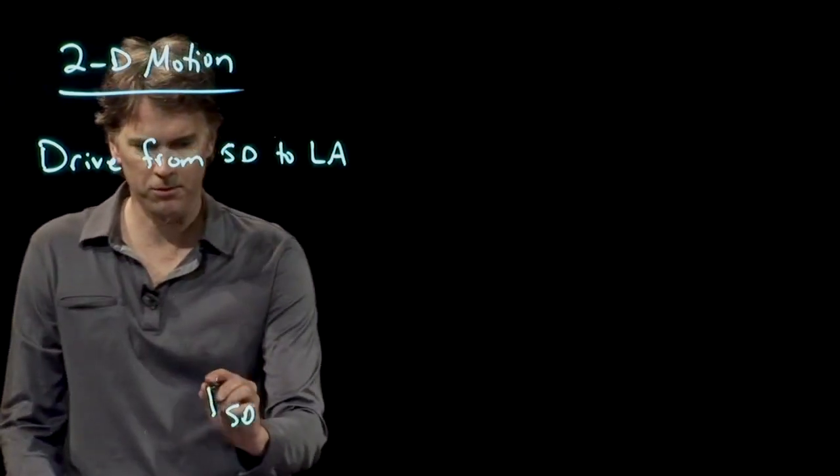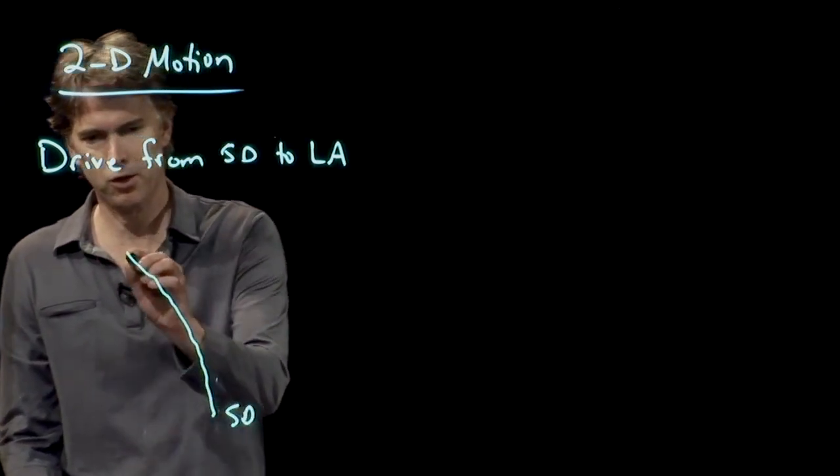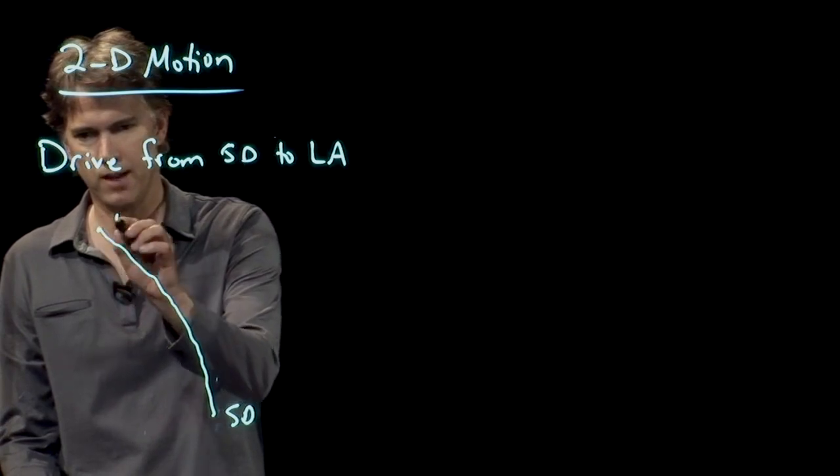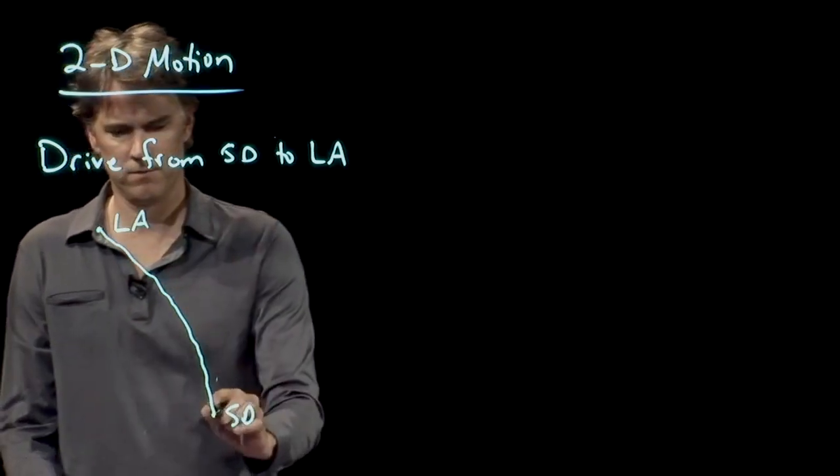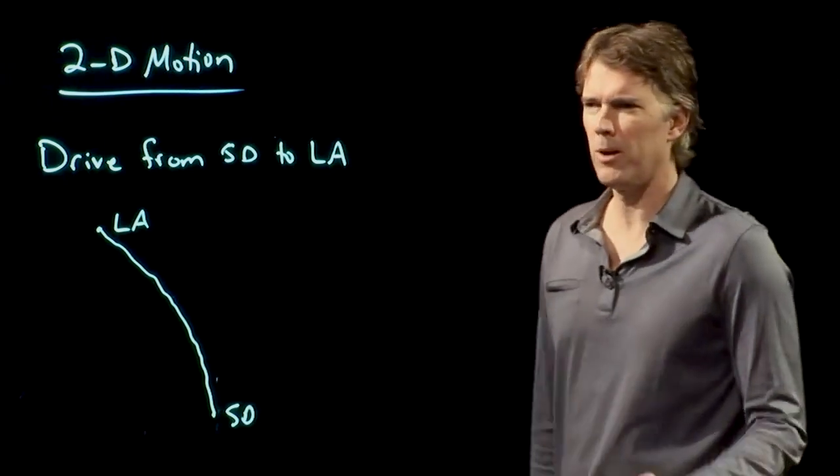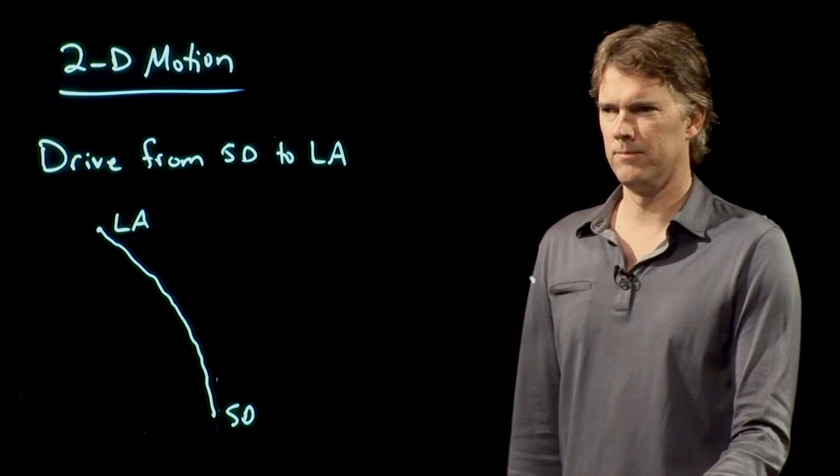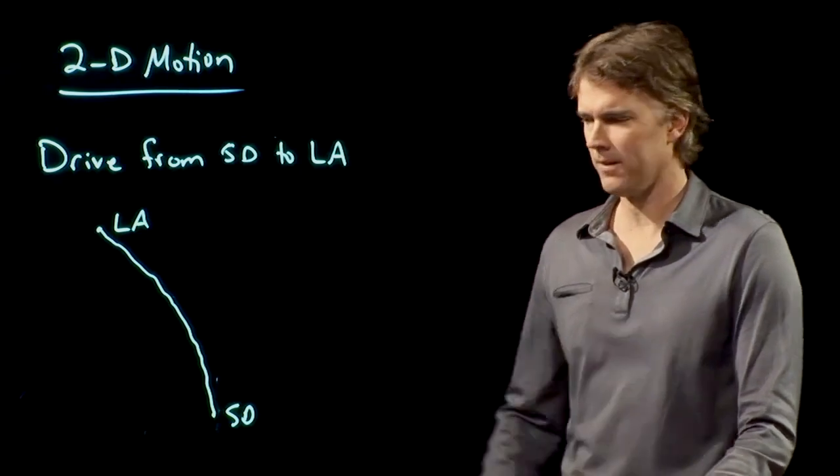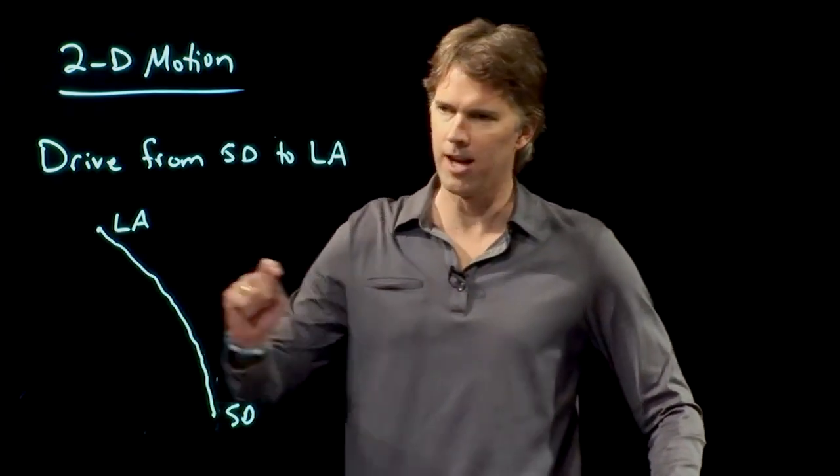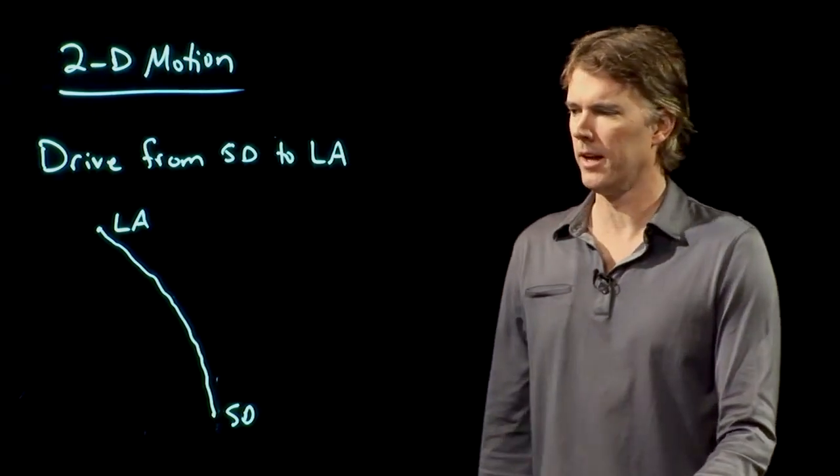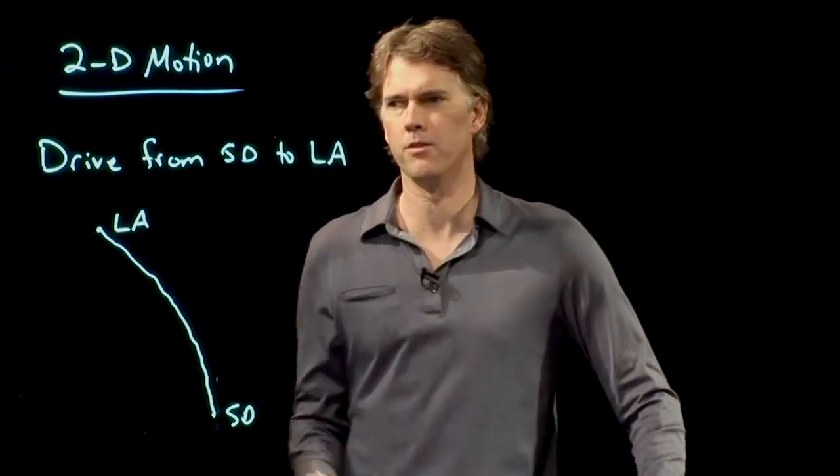Right? It sort of squiggles around a bit, but it curves to the left. Why does it curve to the left? Why wouldn't we just go in a straight line from San Diego to LA? Because the ocean's in the way. Right? This is the curve of California between San Diego and LA. And so we can't go in a straight line because the ocean's in the way.